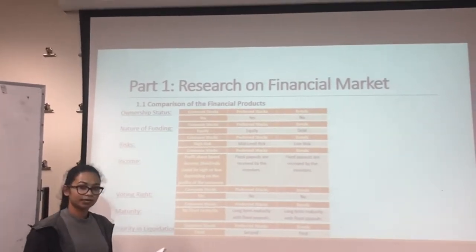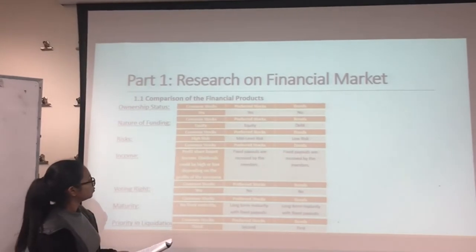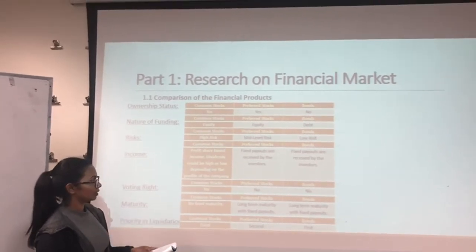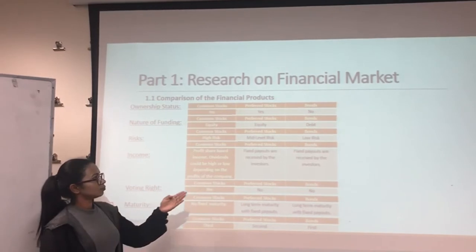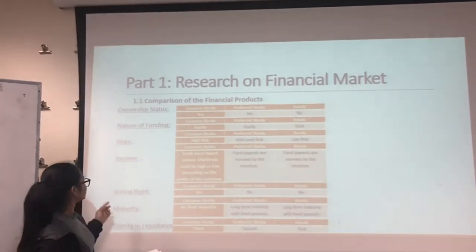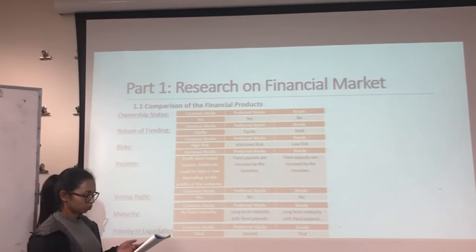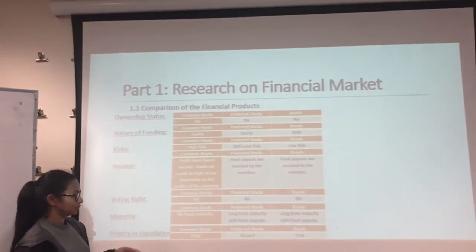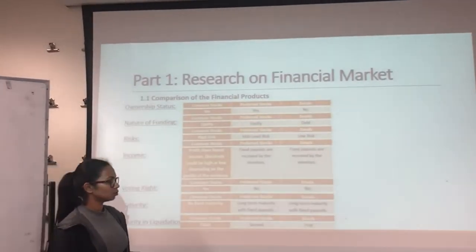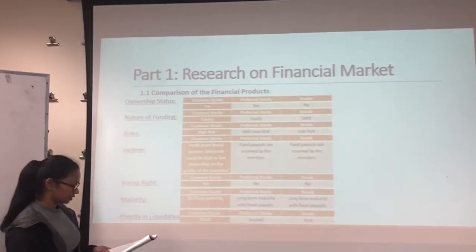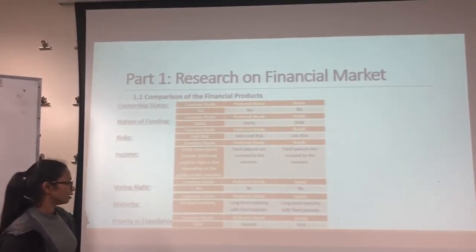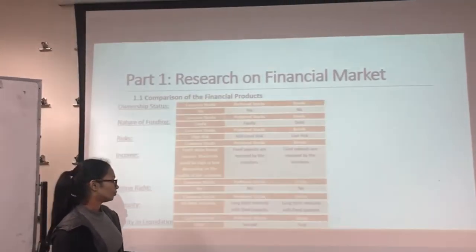The next criterion is income, which describes the status of income earned by investors. Common stockholders receive dividends based on the company's profits, while preferred stocks and bonds have fixed payouts received by investors. The next criterion is voting rights — the right to vote at general shareholder meetings. Common stockholders have the right to vote. However, preferred stockholders and bond holders do not have voting rights. Maturity refers to the maturity time of the instruments. Common stockholders do not have a fixed maturity time.